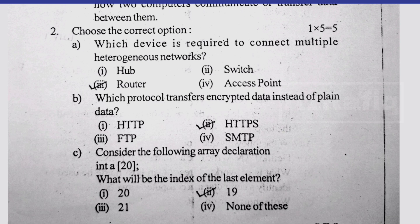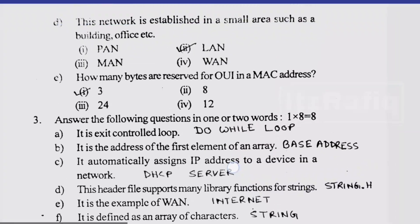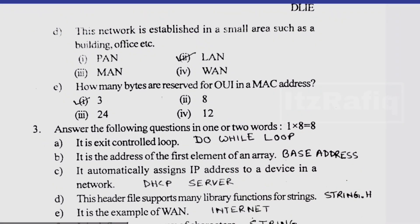Then question number d, the network is established to small network, it is LAN. Then how many bytes are reserved for OUI? It is 3 bytes.